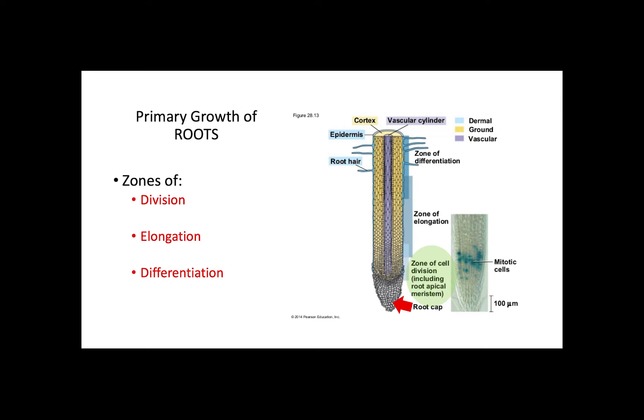The division zone is located immediately before the root cap at the end of the root. This is an area of intensive cell division, and it is possible to identify several cells undergoing mitosis. The elongation zone is the middle zone, and it is where most of the growth actually occurs.